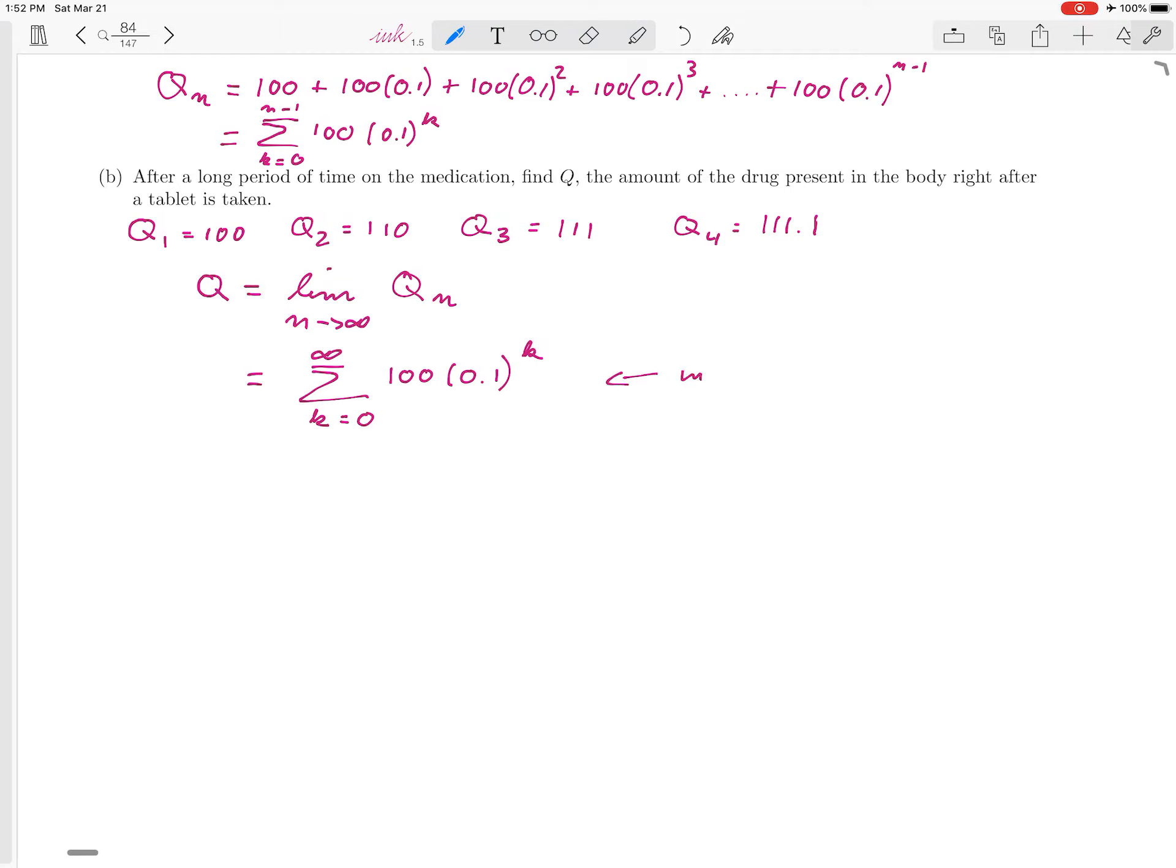That is an infinite sum. An infinite sum has infinitely many terms. We can't write down all the terms, but just to get a feeling for what this looks like, this is 100 plus 100 times 0.1 plus 100 times 0.1 squared plus 100 times 0.1 cubed and so on. This goes on forever.